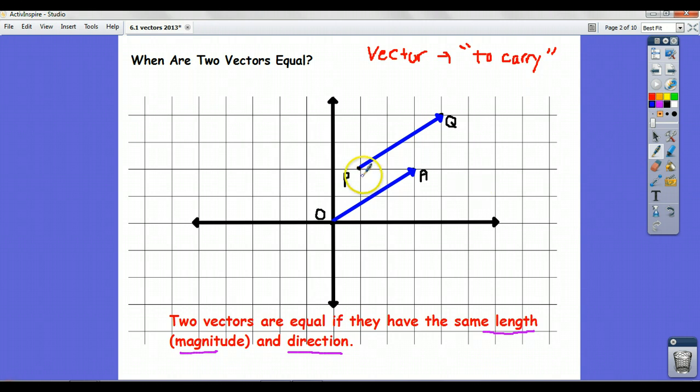So this vector here, pq, moves you three to the right and up two. In fact, let's give it a name. Let's just call it vector u. So vector u moves you three to the right and up two.